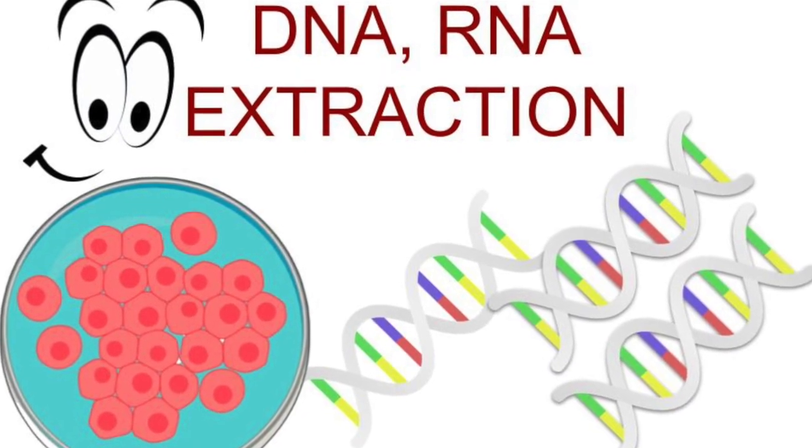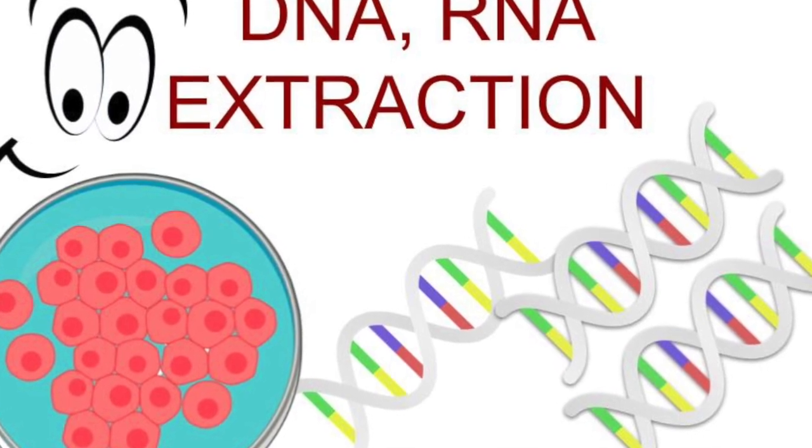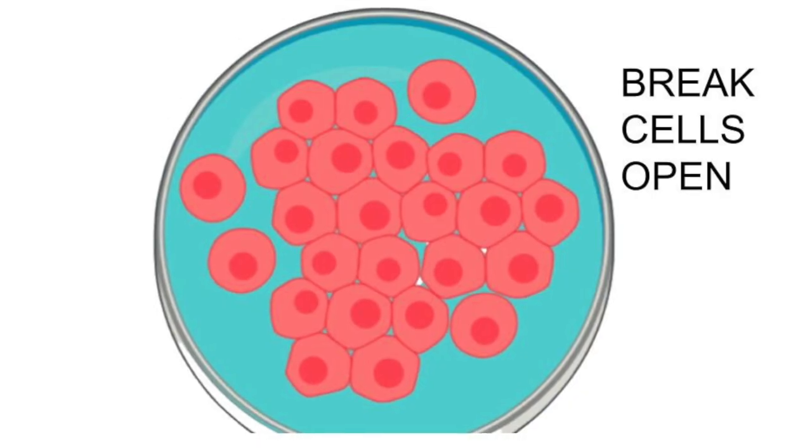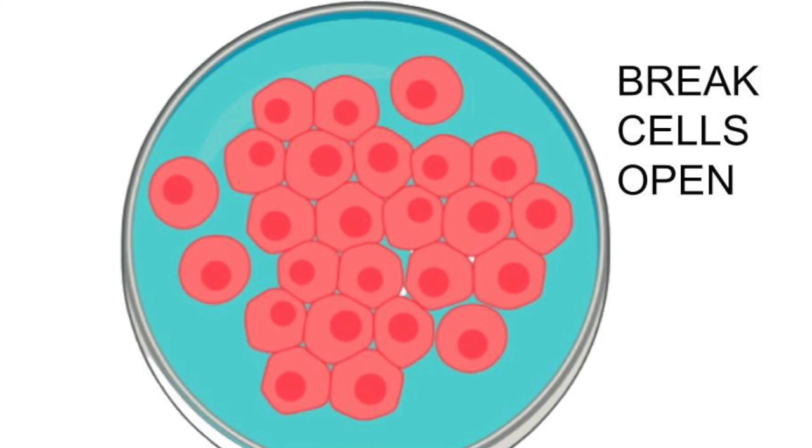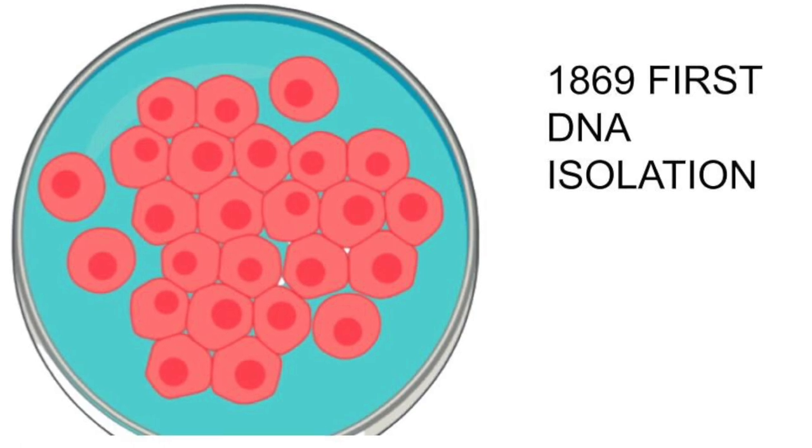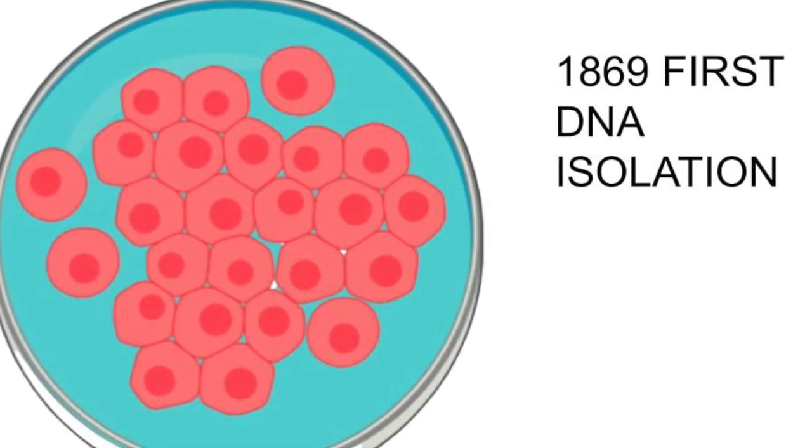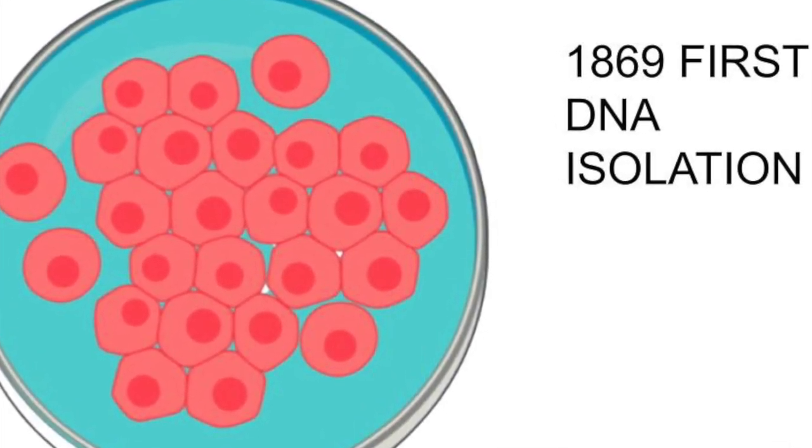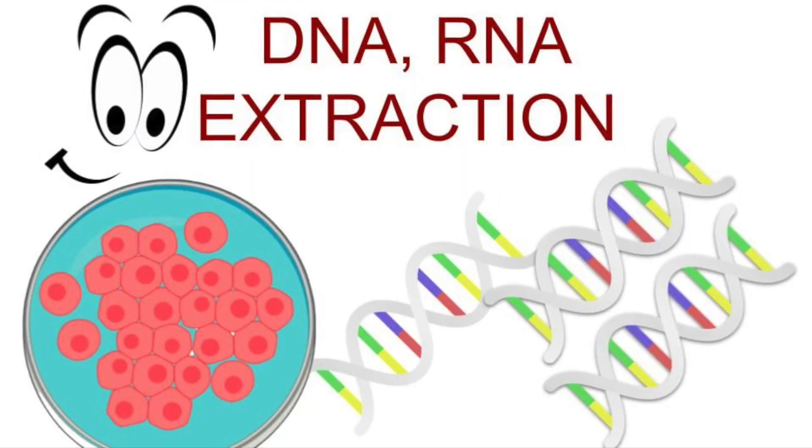This involves breaking open not only the cell membrane but also the nuclear membrane. Fun fact: Friedrich Miescher in 1869 did the first DNA isolation. There are several methods for extracting DNA or RNA from a cell, but the aim is to find a technique that gives you a decent quantity and quality.